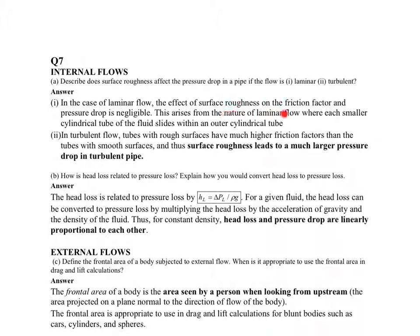From the nature of laminar flow, one tube slides inside an outer tube, and the outermost tube touching the wall encompasses the roughness, so there's no question of the surface roughness affecting the flow.